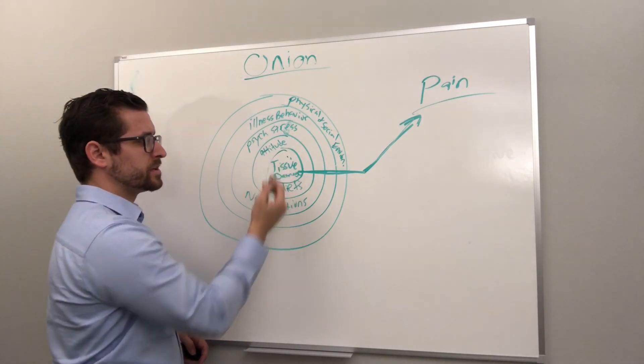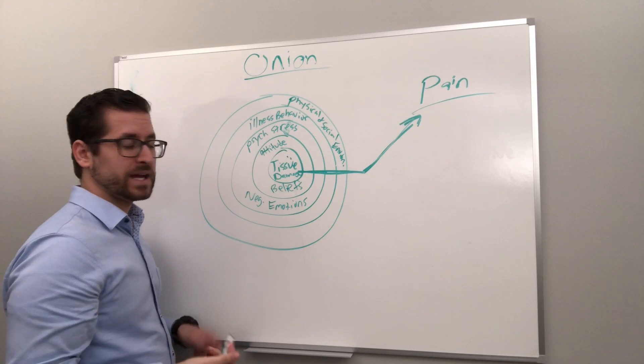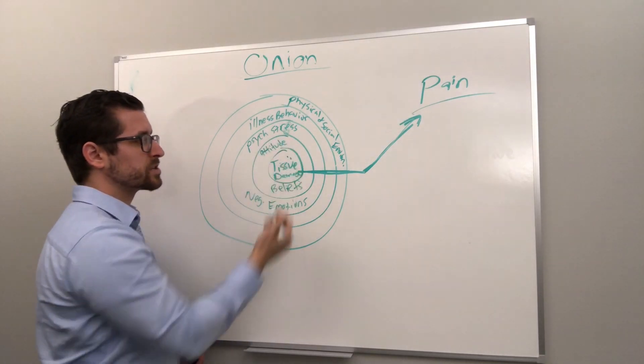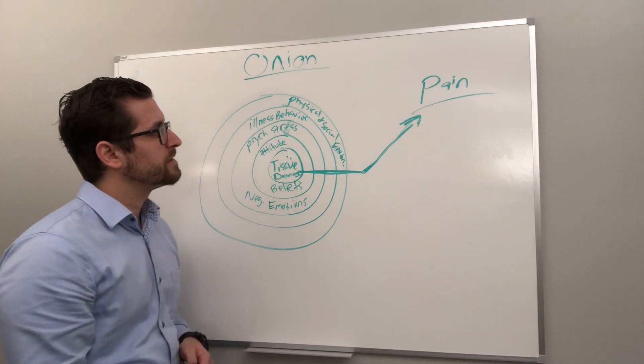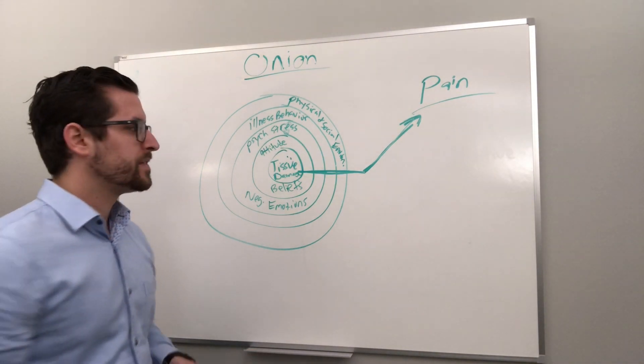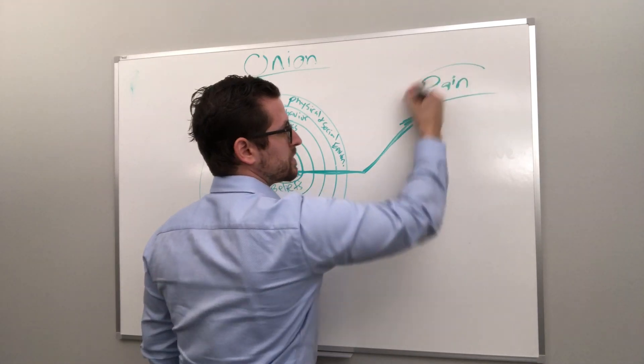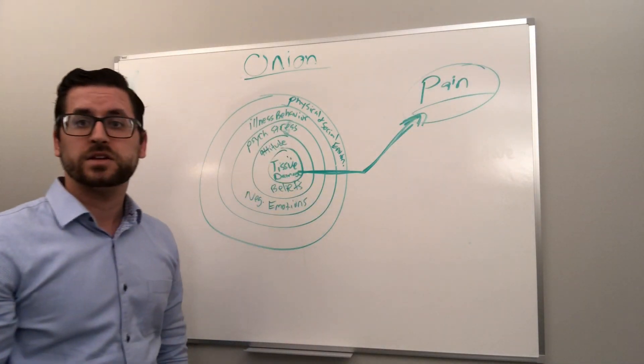So on your first concentric layer, your attitudes and your beliefs about pain and recovery, psychological stressors, negative emotions, illness behavior, and physical and social environment—they all have an impact on how and why you feel the pain that you do.